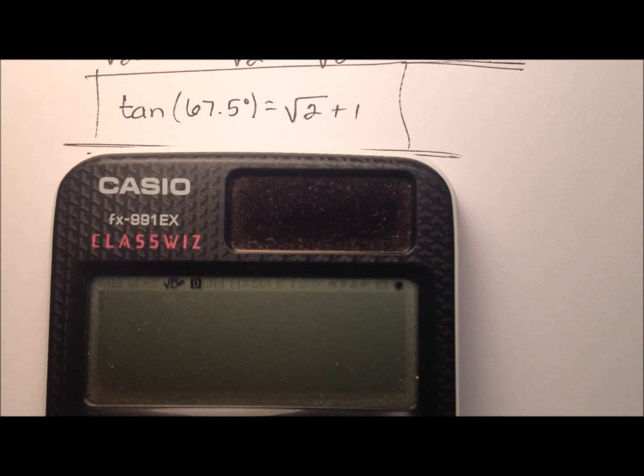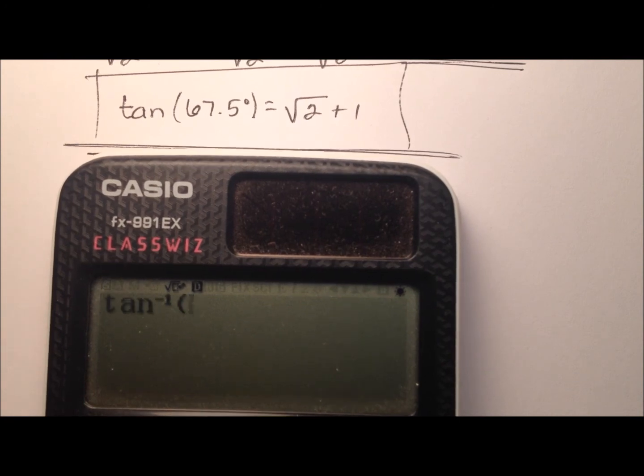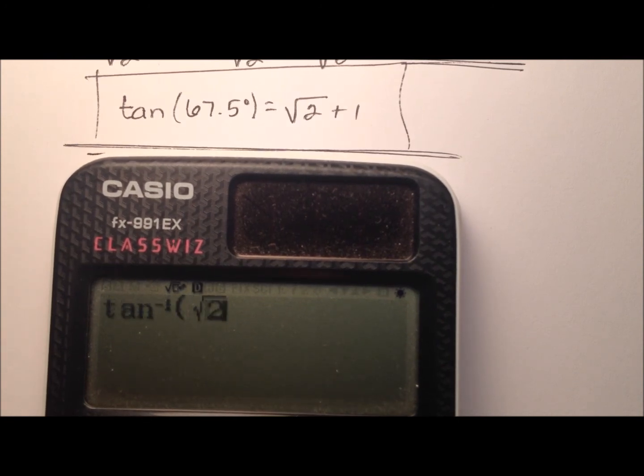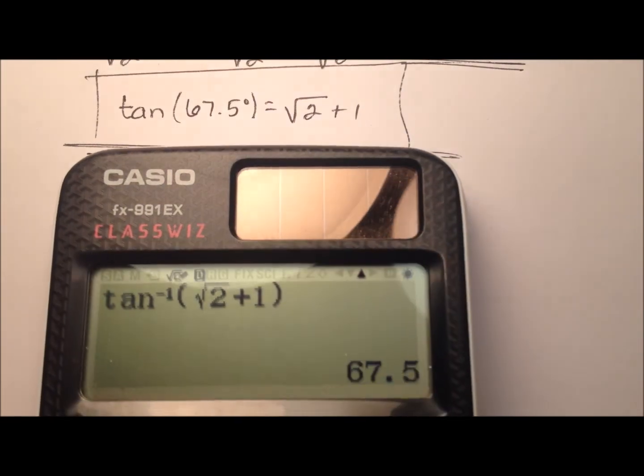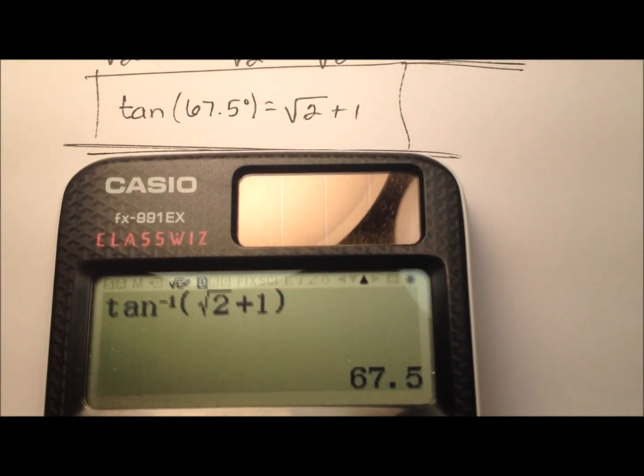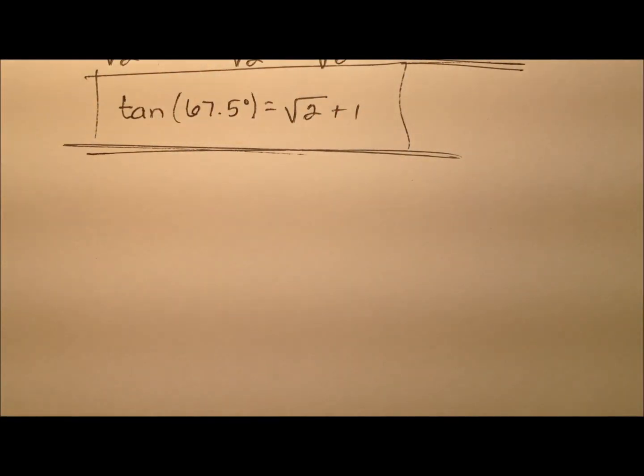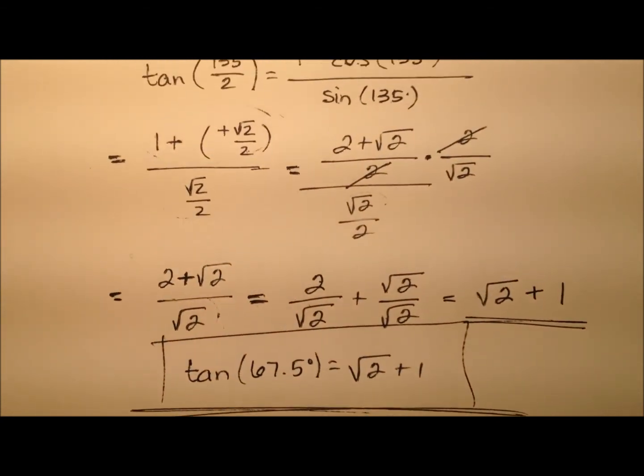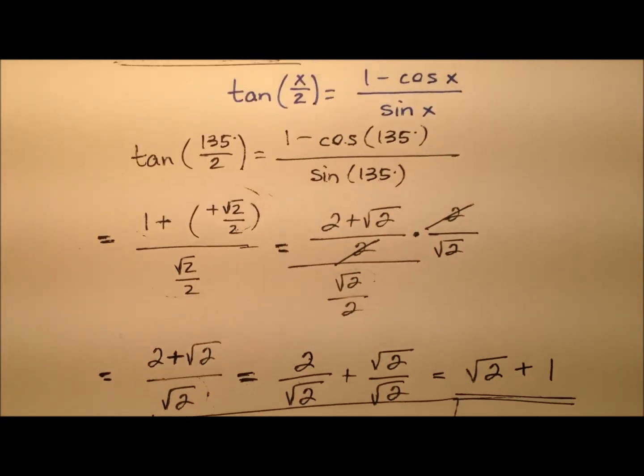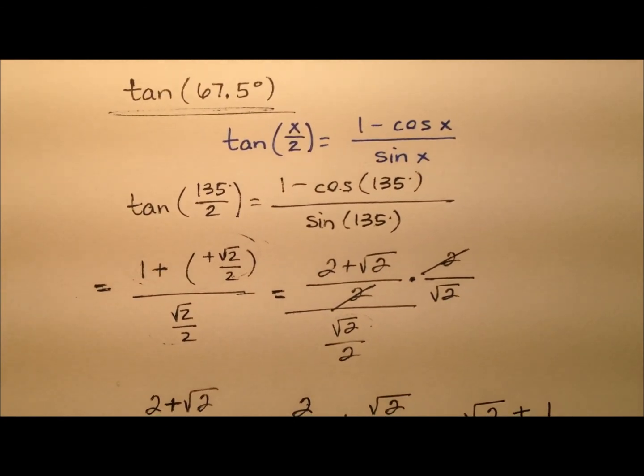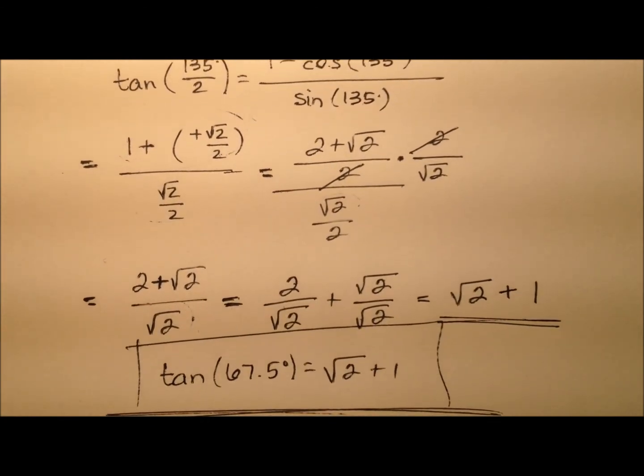So we'll use the inverse tangent here. So inverse tangent of, and then we'll just put this ratio in here, the square root of 2 plus 1. And this is 135 over 2, or yeah, 67.5 degrees. So we can see here that this is going to be the exact value for the tangent of 67.5 degrees. And we found that by using this half-angle identity for tangent.